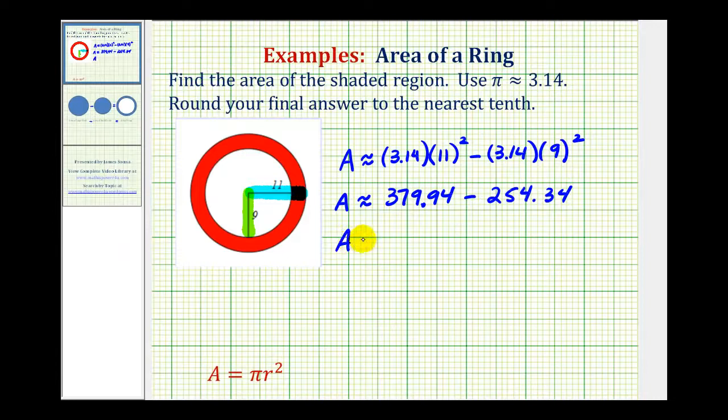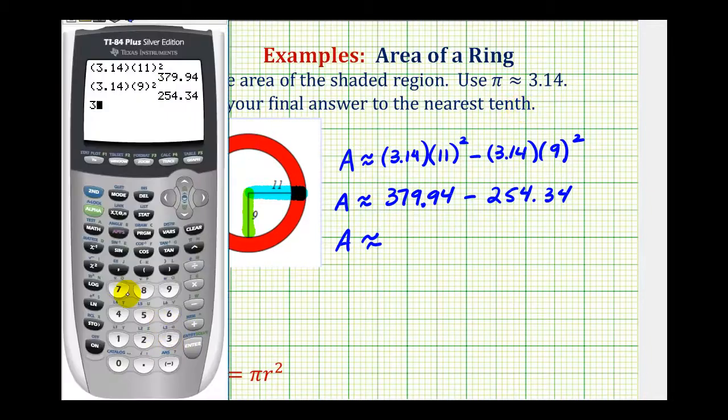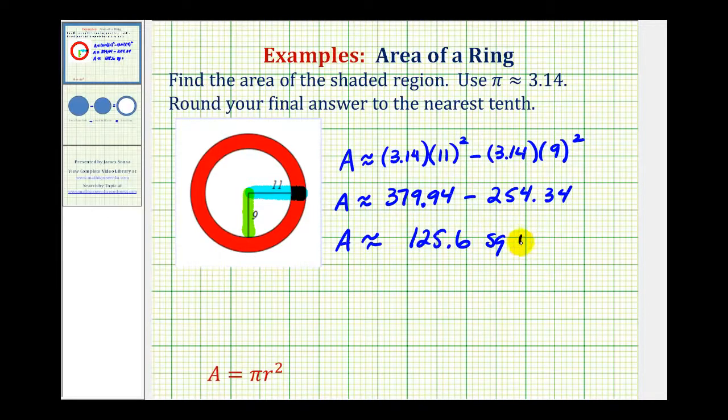And now we'll go ahead and find this difference. And then again, it does ask us to round to the tenths. Notice this difference only contains the tenths place value. So this would be our approximation for the area of the red ring or the red shaded region. One hundred twenty-five point six square units. Or one hundred twenty-five and six tenths square units.